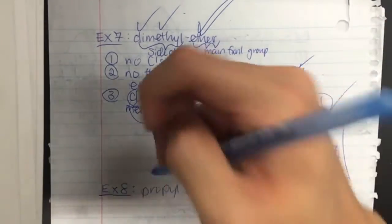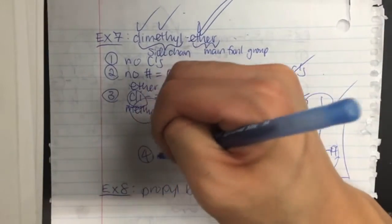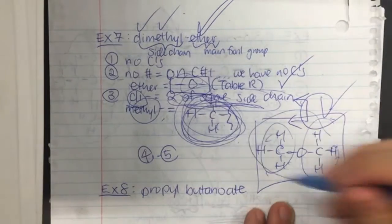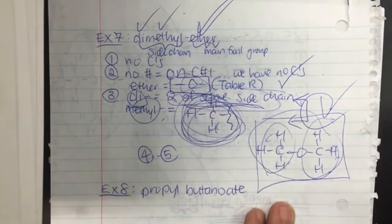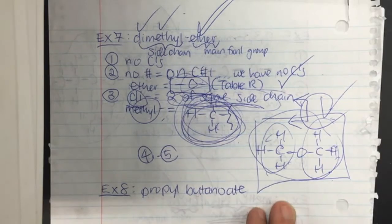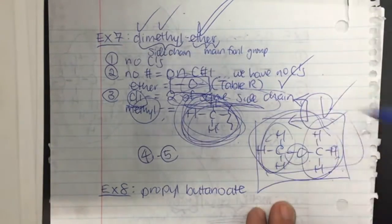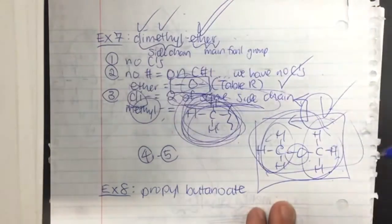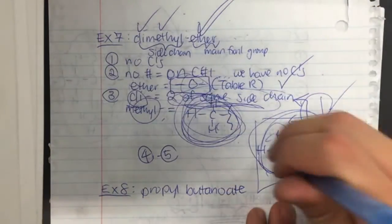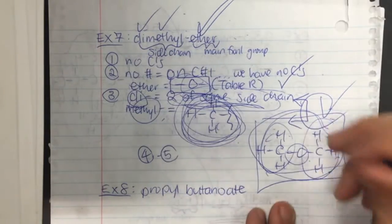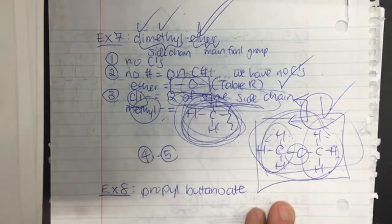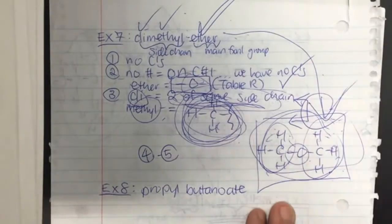Skip steps 4 through 5 because we already have H's in all the empty spots and four bonds maximum around each C. This is dimethyl ether: an ether in the middle with two of the same methyl sidechain on the left and right sides. This is the structural formula for dimethyl ether.